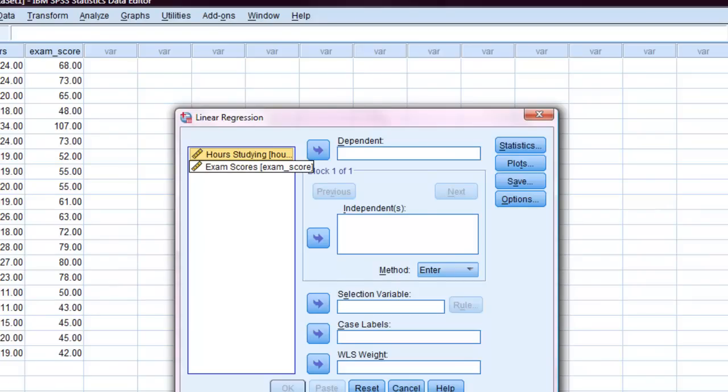I am going to choose hours studying as the independent or predictor variable. And exam scores will be the dependent or criterion variable. And that's it. Move that over and then click OK.